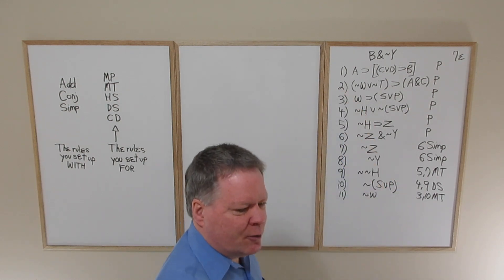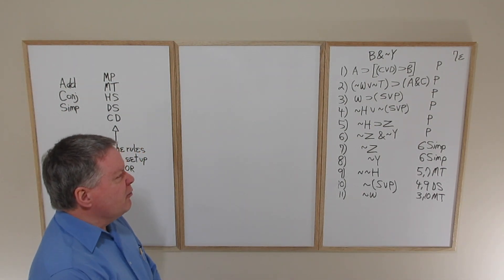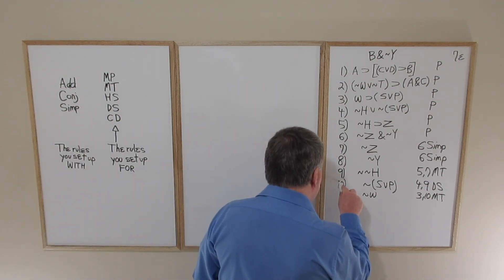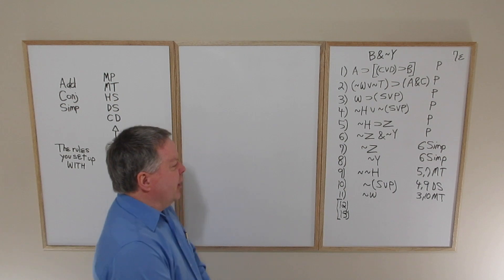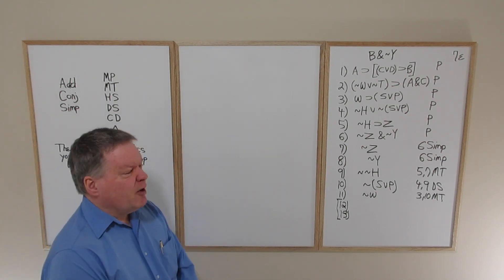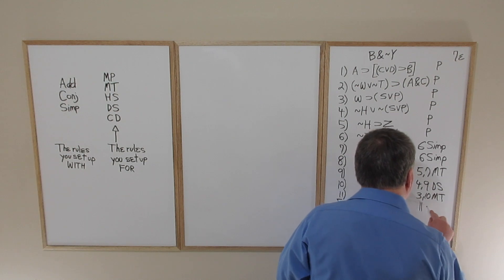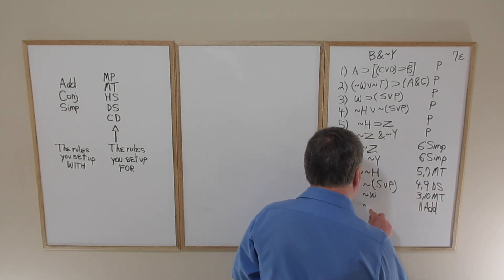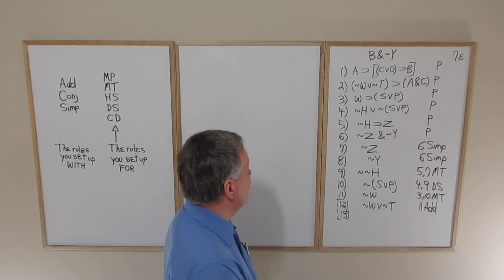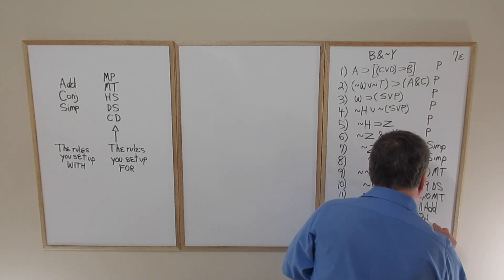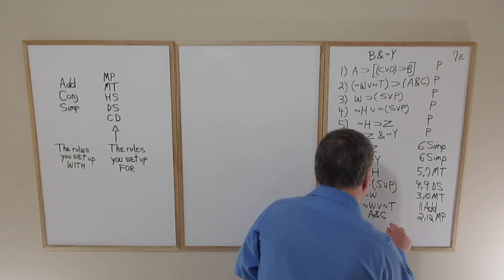Hopefully you're familiar enough to notice that lines two and eleven don't give us a rule employment opportunity directly, but we've got a situation where a strategic addition set-up will give us the modus ponens opportunity. With that in mind, line eleven addition gives us tilde W or tilde T. We do that particular addition step so that we can do two, twelve modus ponens to get the conjunction A and C.